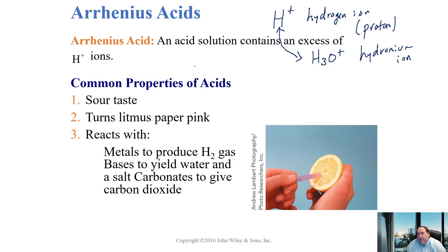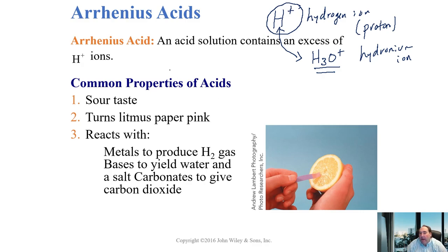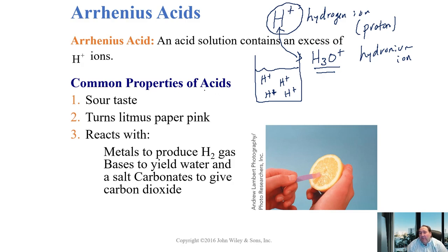H+ and H3O+ are used interchangeably in chemical reactions and formulas. I use H+ most of the time; many books use H3O+. Anywhere I write H+ you could reasonably substitute H3O+. They both represent the acid part of the solution — specifically free H+ ions floating around in aqueous solution. The amount of free H+ determines whether a solution is acidic or basic.